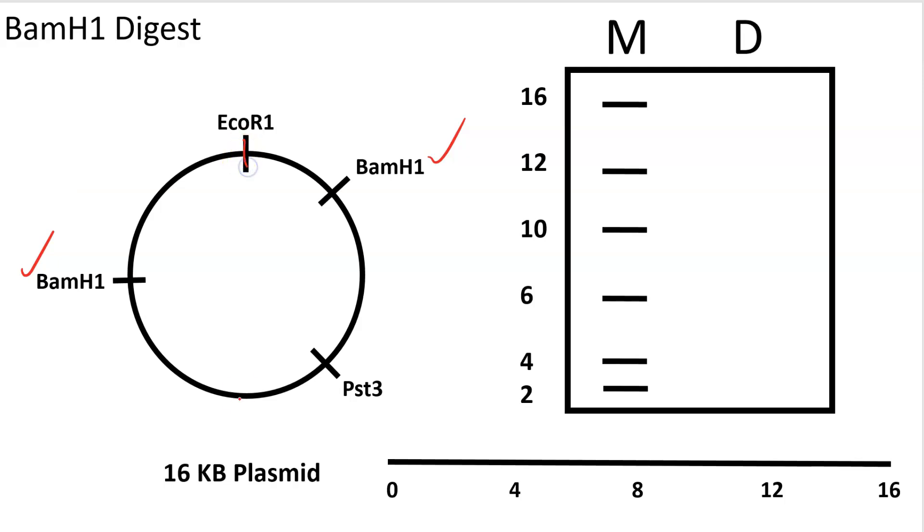So EcoR1 up here, down here is one quadrant. There's a BamH1 site over here and here we can draw another one. So if you break up something that's 16 KB in size, we could say that this quadrant over here is 4, this quadrant over here is 4, this quadrant is 4, and this quadrant is 4 KB. We can also say that if you break up each quadrant in half, you'll get 2 KB fragments. So for example, for this 4 KB span, if you break it up here with this BamH1 site, that's 2 KB and 2 KB. So you can say that around the entire length of the plasmid.